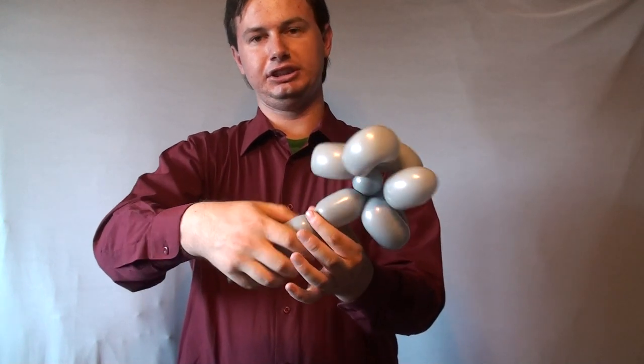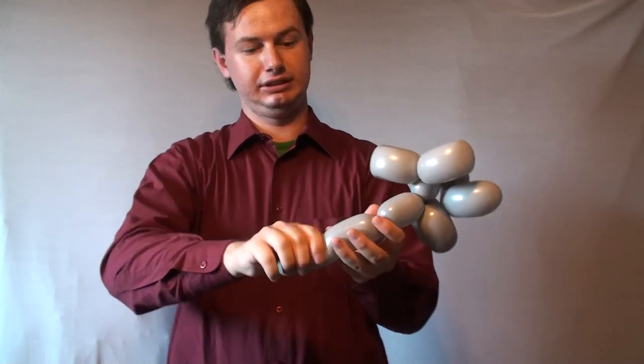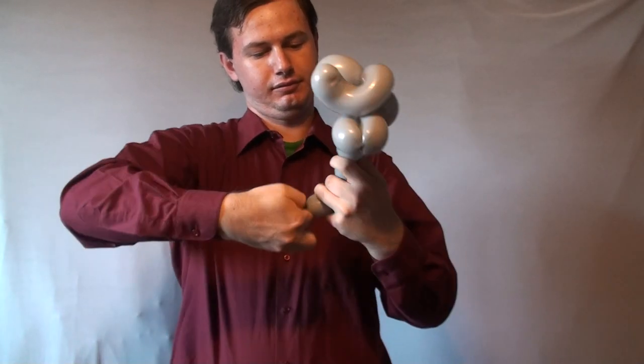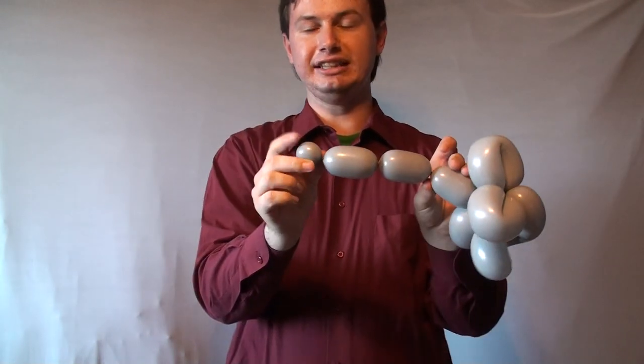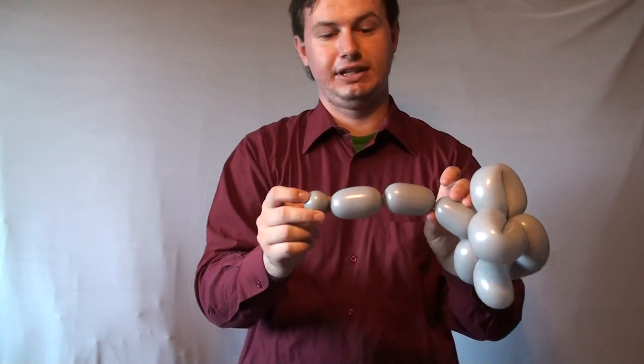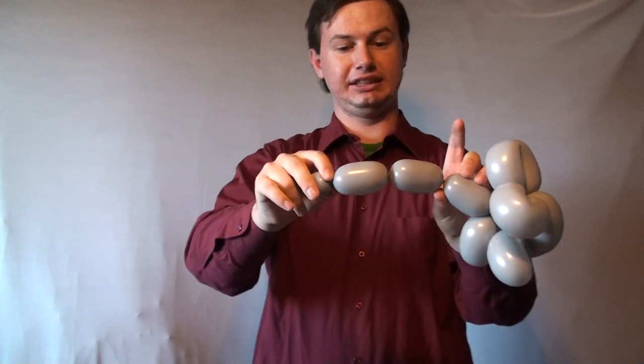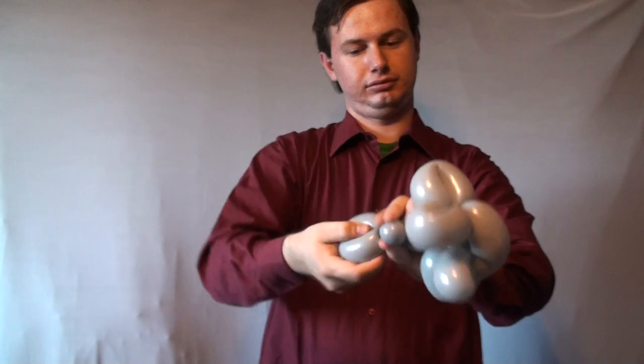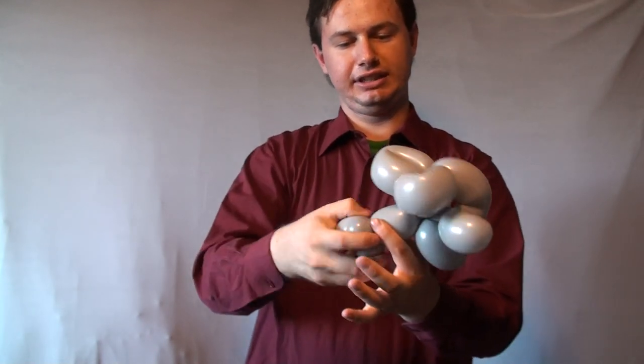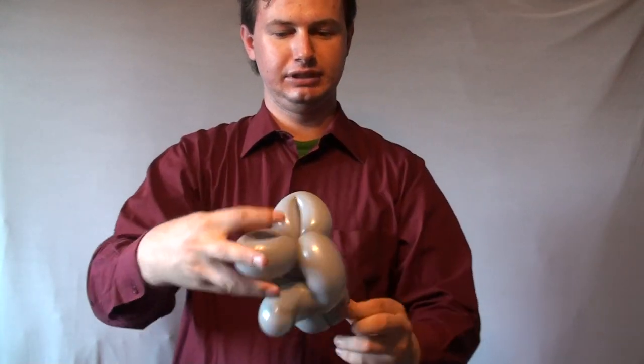And then same thing for the back legs as we did with the front. Just a little bit left over. If you've got more than me, that's fine. This is going to be the tail. So twist this section here into this section here and adjust everything so both the legs are on the bottom.